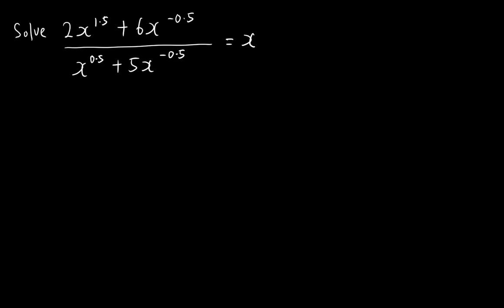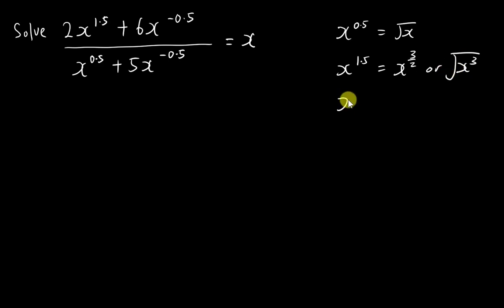Basically, to do a question like this, you need to understand what the powers 1.5, -0.5, and 0.5 mean. x to the power 0.5 means square root of x. x to the power 1.5 is x to the power 3 over 2, or x cubed then square-rooted. x to the power negative 0.5 is 1 over the square root of x.